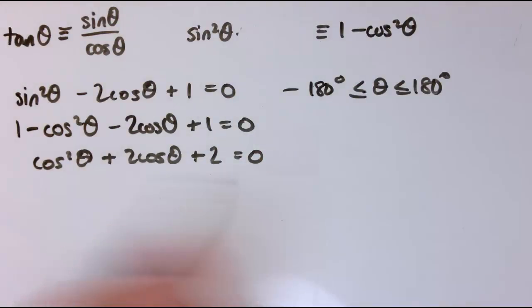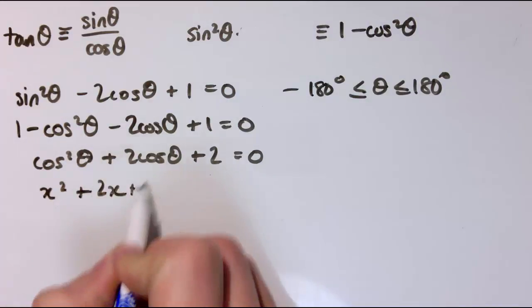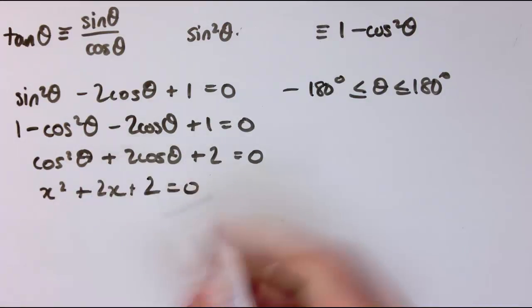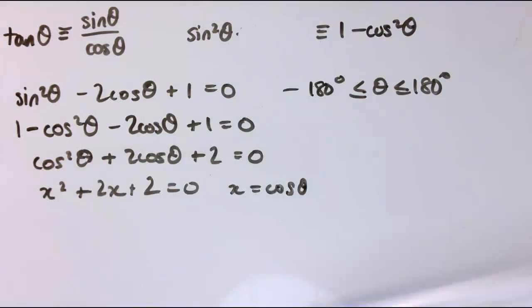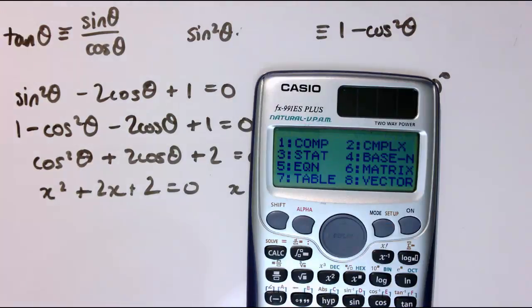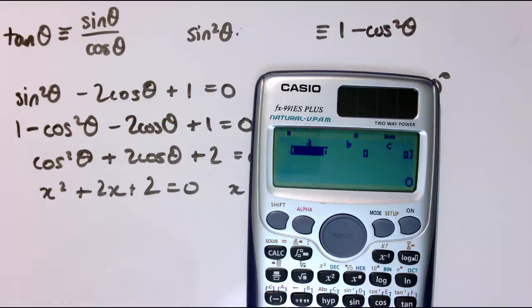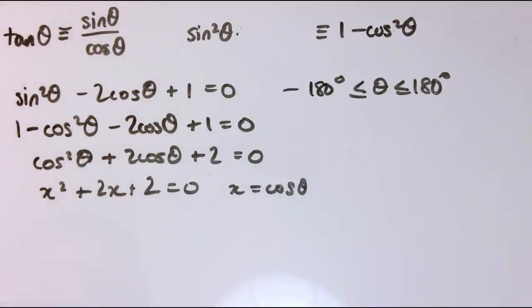So this is now a bit like a quadratic equation. It's a bit like x² plus 2x plus 2 equals 0, where I've replaced x cos θ with x. So if I solve that quadratic equation, and let's save some time here and just use the quadratic solver to do that, so a equals 1, b equals 2, c equals 2,